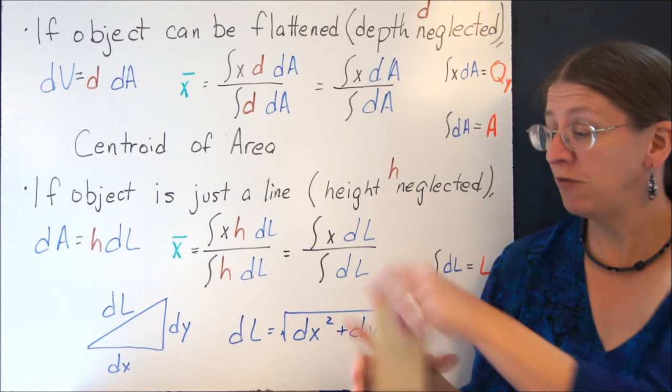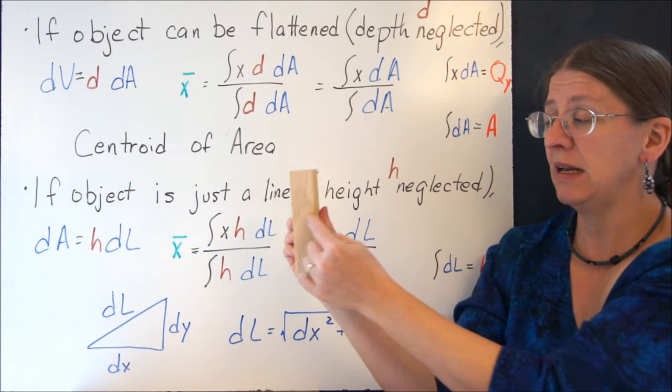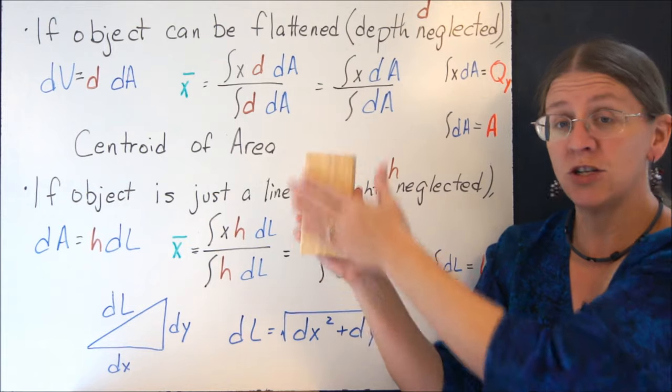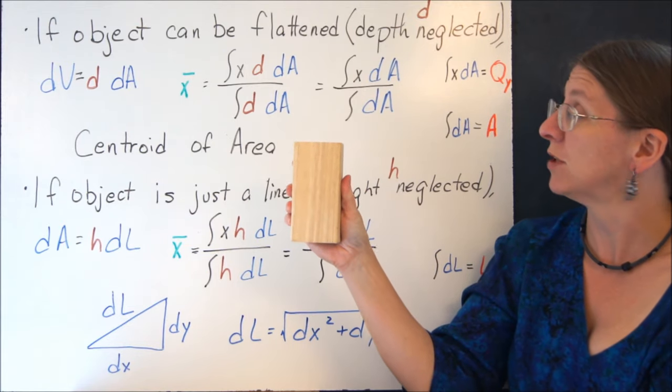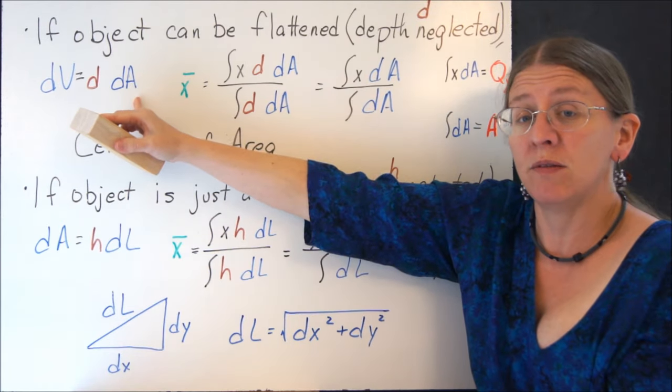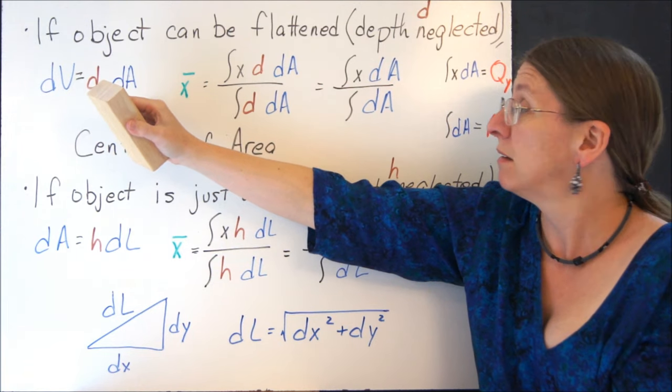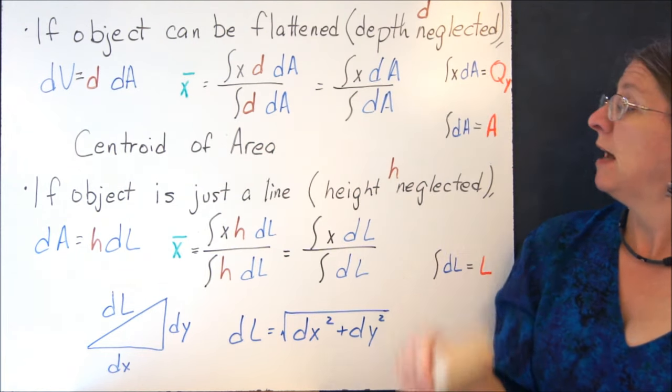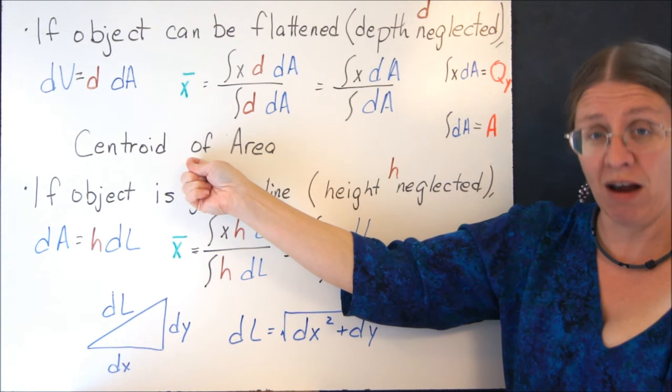If your object can be flattened, so if this doesn't really matter and I can just treat this block as a two-dimensional object, then dV is some depth times dA. And I can pull the depth out and cancel it. Now I have what we call the centroid of the area.